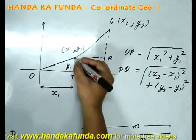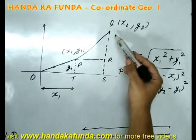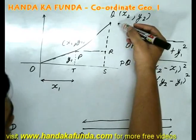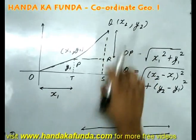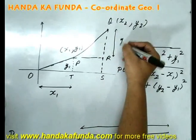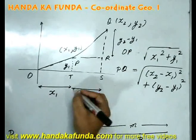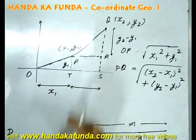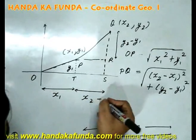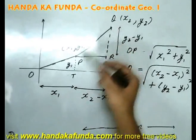Very similarly, if I am given two points P and Q, the straight line distance between the two points P and Q will be given by this formula. How do we get this? The height of Q from the x-axis is y2, but if I remove y1 from it, I will get the value of QR as y2 minus y1. Very similarly, the horizontal distance of point Q from the y-axis is x2, but if I remove the part x1, I can get TS as x2 minus x1 or PR as x2 minus x1.